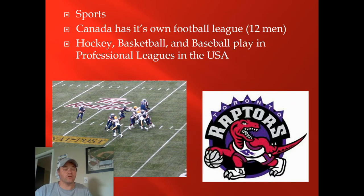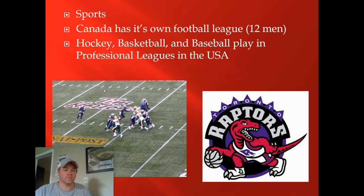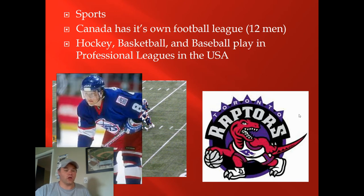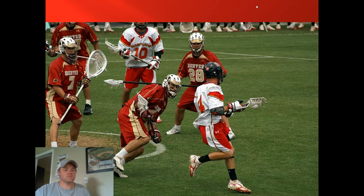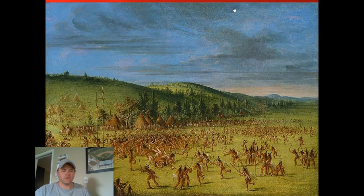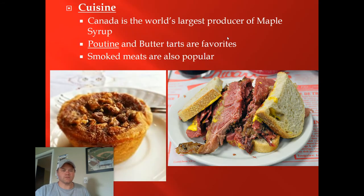Sports in Canada are similar to the U.S. They have their own football league — no NFL teams — and they play with 12 players on the field with some different rules. The Toronto Raptors are their lone NBA team; the Vancouver Grizzlies moved away. For baseball, they have the Toronto Blue Jays — the Montreal Expos moved to Washington D.C. The Blue Jays won back-to-back World Series in '92 and '93. There are several pro hockey teams, and lacrosse — an old Iroquois sport — is also very popular; those original games used to go on for days.